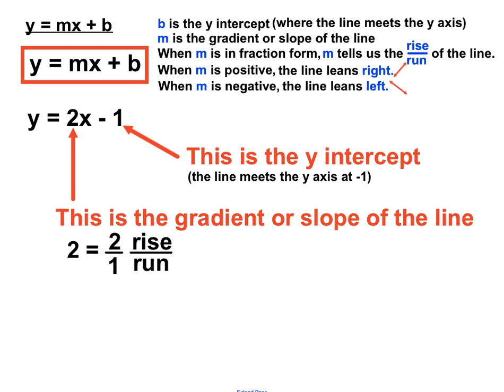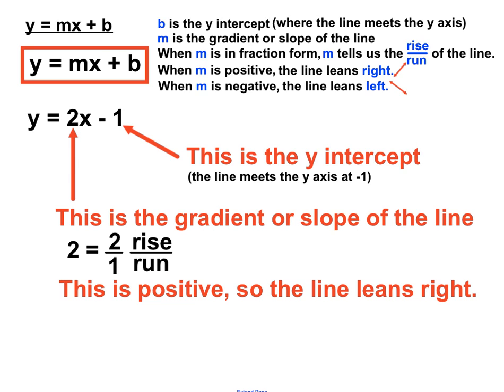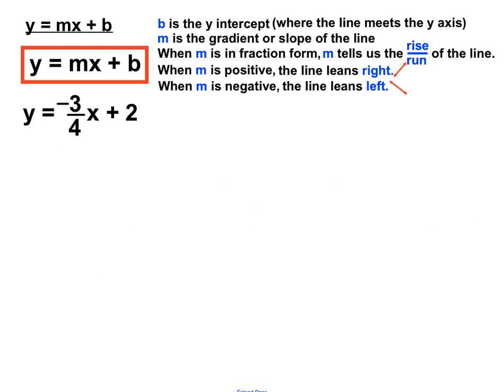This is a fairly steep line — it rises twice as much as it runs. Also, the fact that this is a positive 2 with no negative in front of it means the line leans to the right. So just from seeing the linear equation, we can tell a lot about what this line looks like. In the next example, we have an m of minus 3 quarters and a b of plus 2.